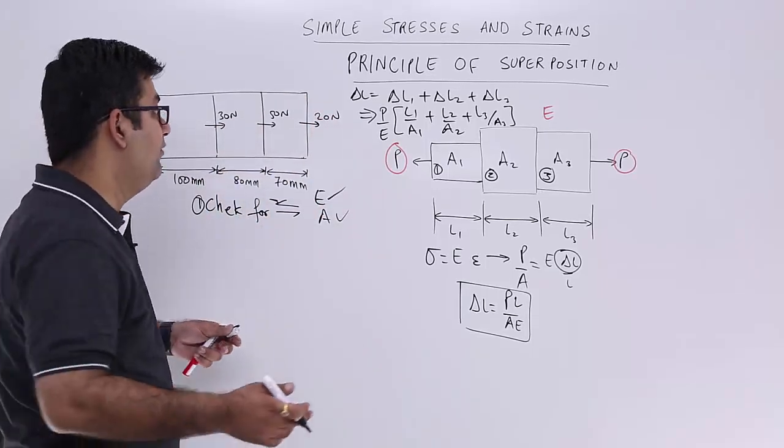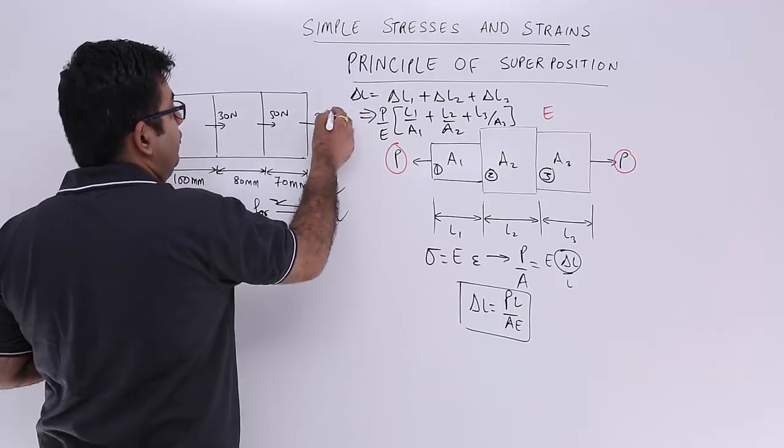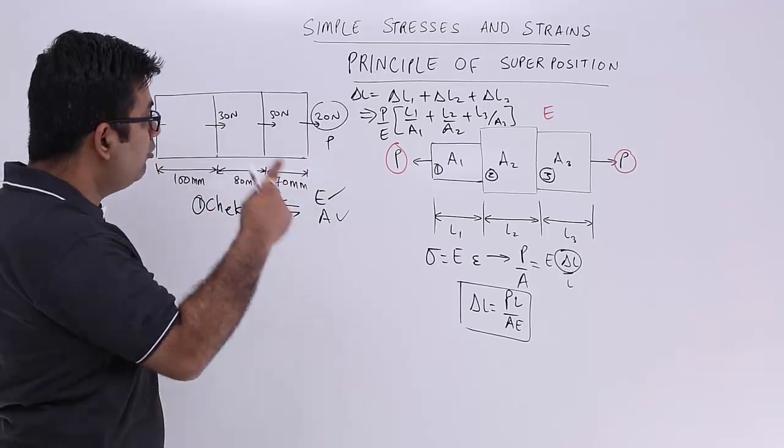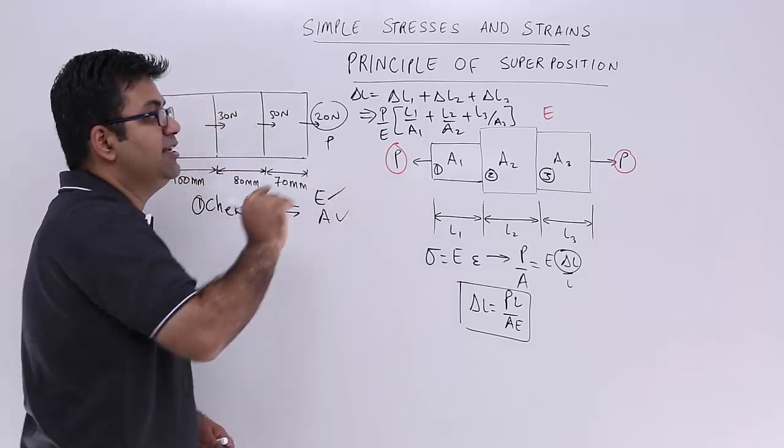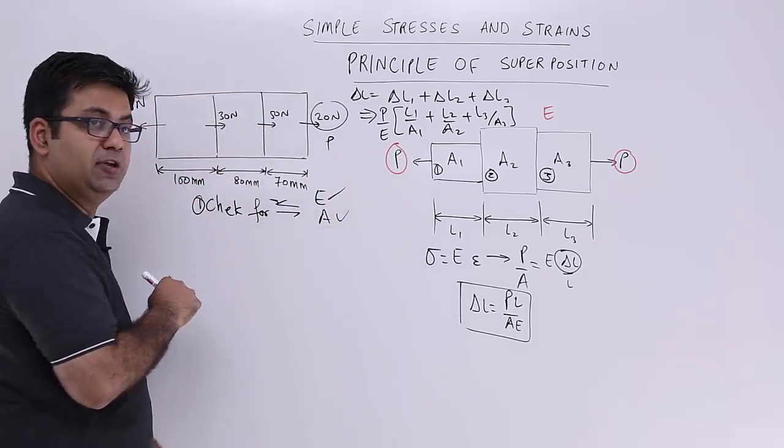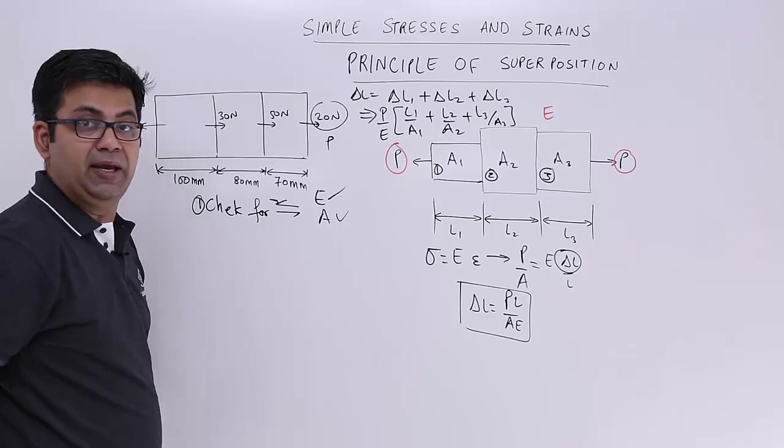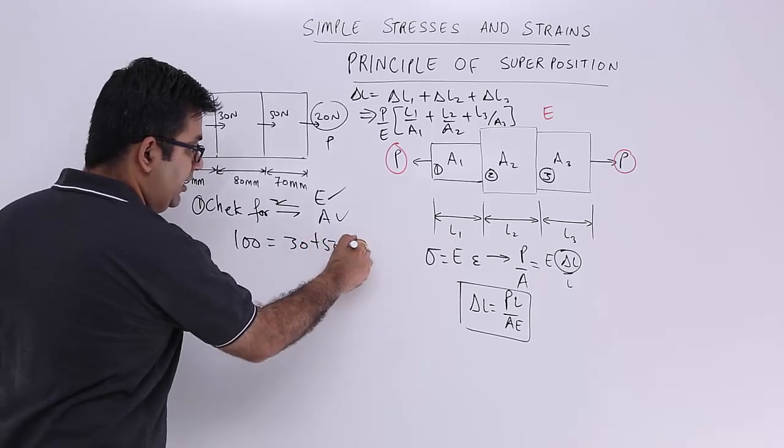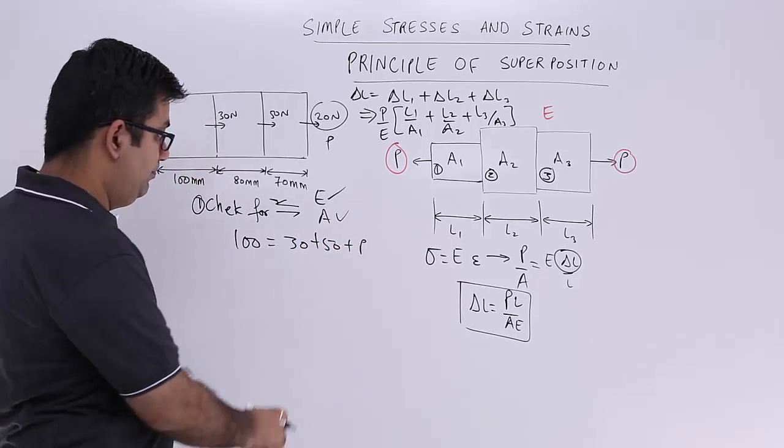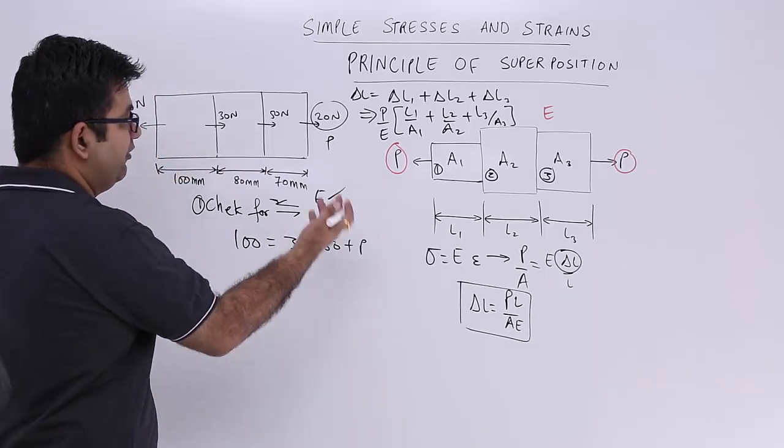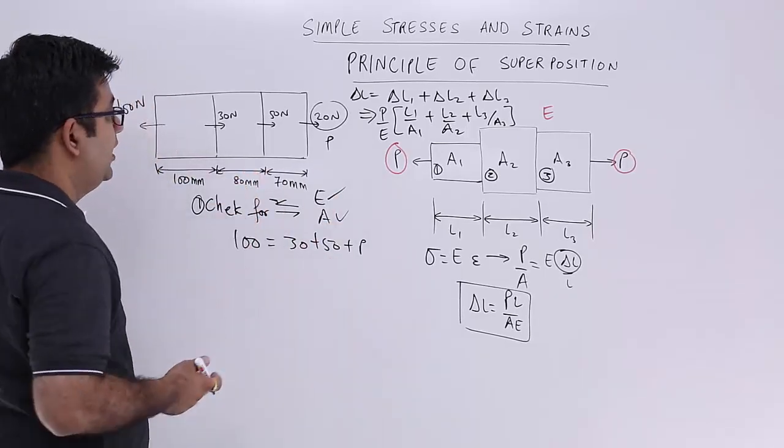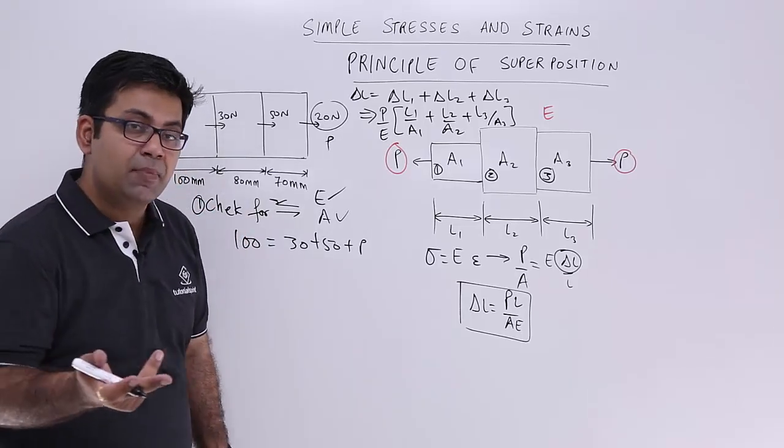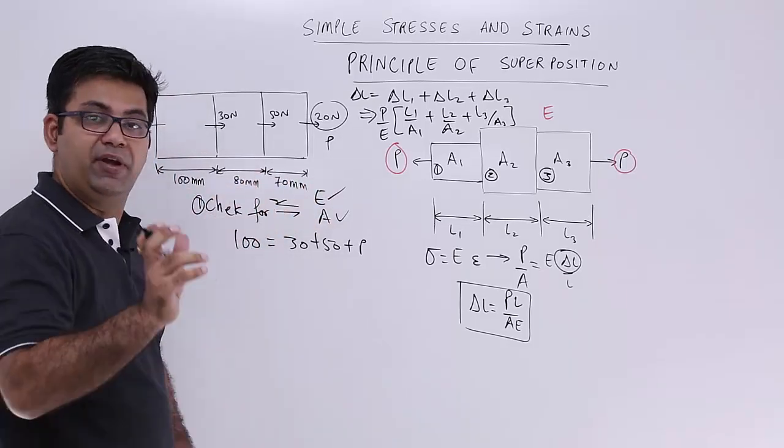Okay another variation that you can have, you might not be given this force. You might be only given P over here. So this becomes an unknown force. Before you find out the net elongation or the net change in the length of this beam or this bar, you have to find out P over here. To find out P you will say 100 is equal to 30 plus 50 plus P. So P from here would be 20. So this is another variation that you can see in this kind of question. Now the very first thing in such a question you should check this.